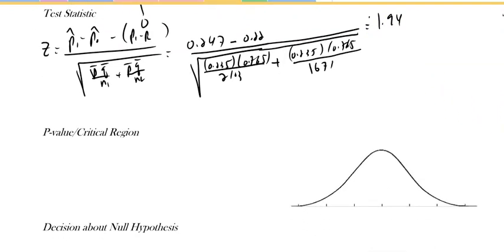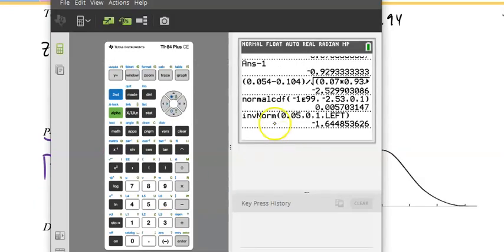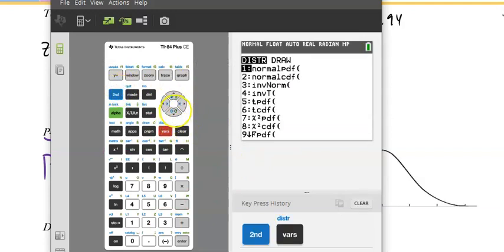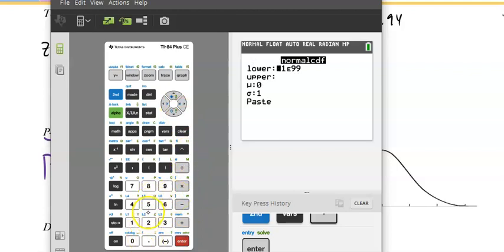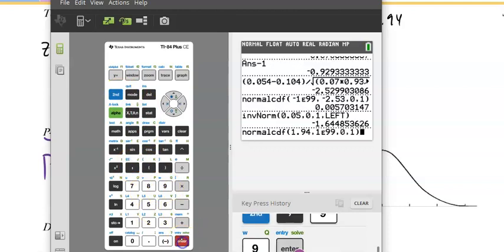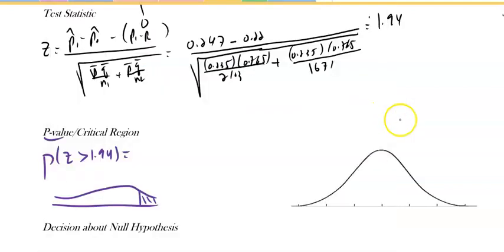Either way, if I want to use the p-test, the p-value, the probability that z is greater than 1.94 using the standard normal distribution, we're going to go to normal CDF. We're going from 1.94, upper bound is 1e99.